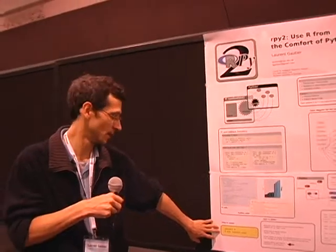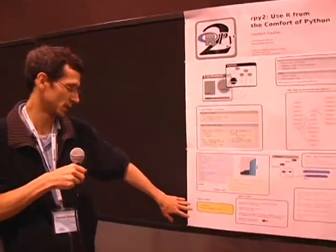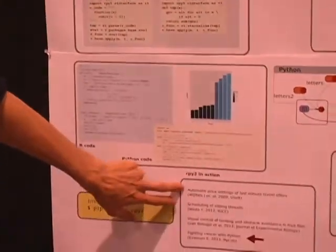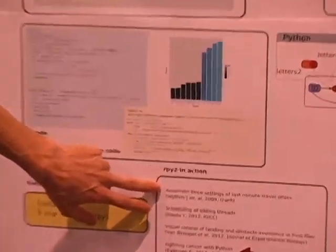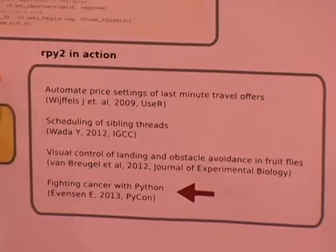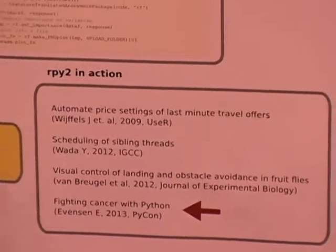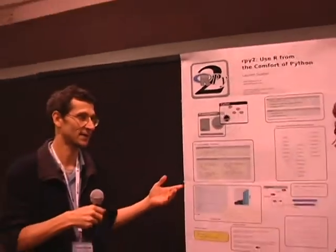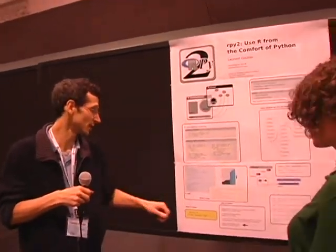Super easy to install with PIP. I mean, as much as packages are easy to install in Python. Here I have an example of use. People have built a GUI desktop client for automation of price setting for a travel agent. People have been scheduling sibling thread. So there is statistical computing of sibling thread and dispatch jobs using Python.